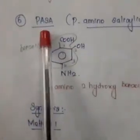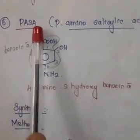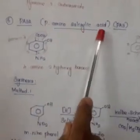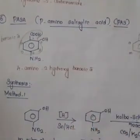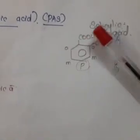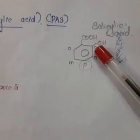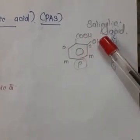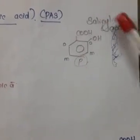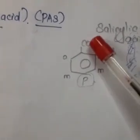The next drug is PASA, which stands for para-amino salicylic acid, also abbreviated PAS. Salicylic acid is a benzene ring with a -COOH group and an -OH in the ortho position, chemically called ortho-hydroxy benzoic acid. Para-amino salicylic acid is derived from this salicylic acid nucleus.